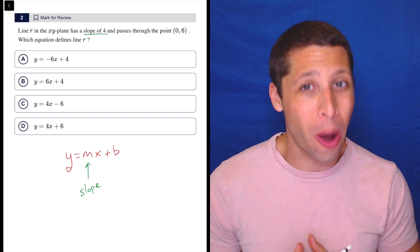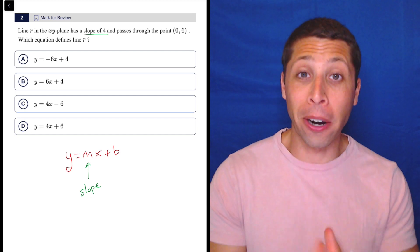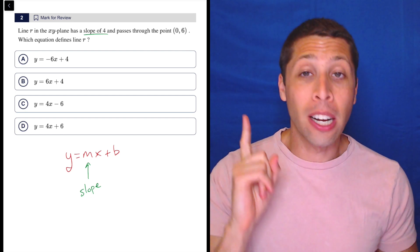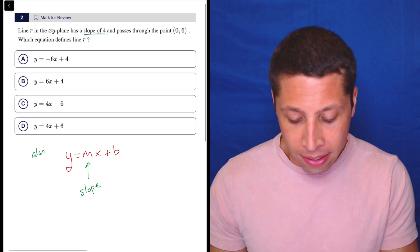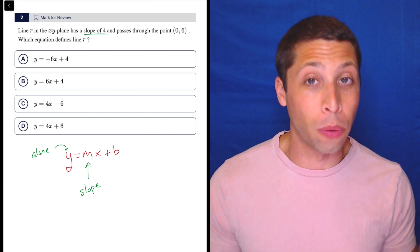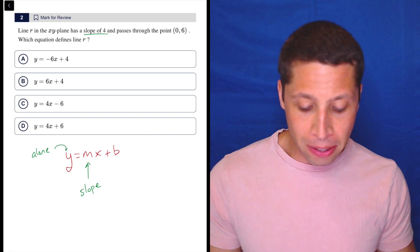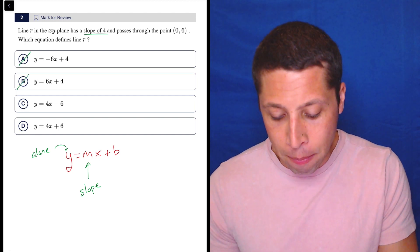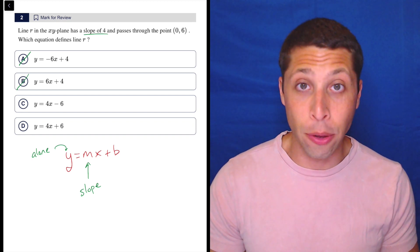Sometimes things get rearranged with y equals mx plus b, but if you've got a part that's attached to an x, that is the slope, assuming that y is alone. This is really important for y equals mx plus b. Just thinking about the slope, we can already see that choices a and b are going to be wrong, they have the wrong value there.